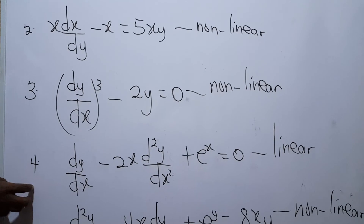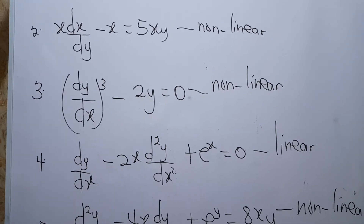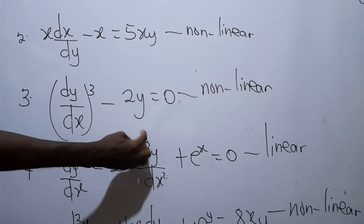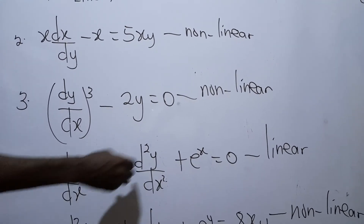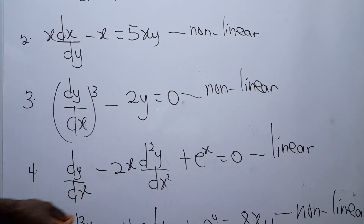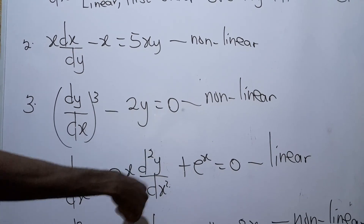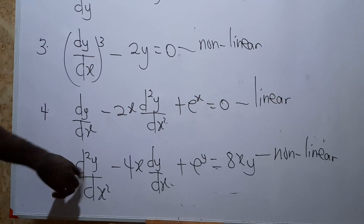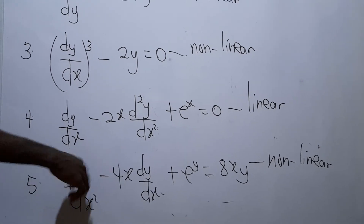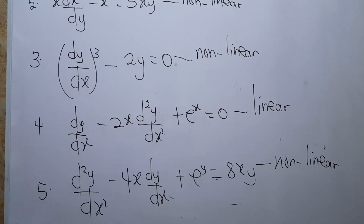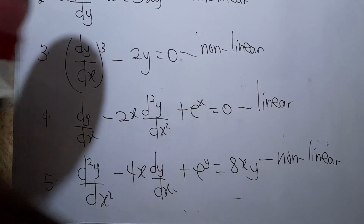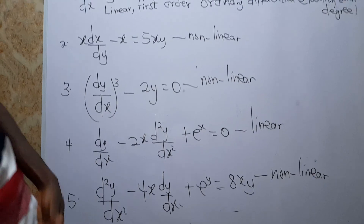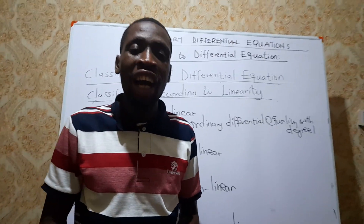The second equation is non-linear, highest order is 1, degree of highest order is 1, and ordinary — so it is a non-linear first-order ordinary differential equation with degree 1. The third equation has highest order 1 and degree 3, so it is a non-linear first-order ordinary differential equation with degree 3. The fourth equation has highest order 2, degree 1, is linear and ordinary — a linear second-order ordinary differential equation with degree 1. The fifth has highest order 2, degree 1, is non-linear — a non-linear second-order ordinary differential equation with degree 1. We'll end it here today. Please subscribe to my YouTube channel. Until we meet again, bye!